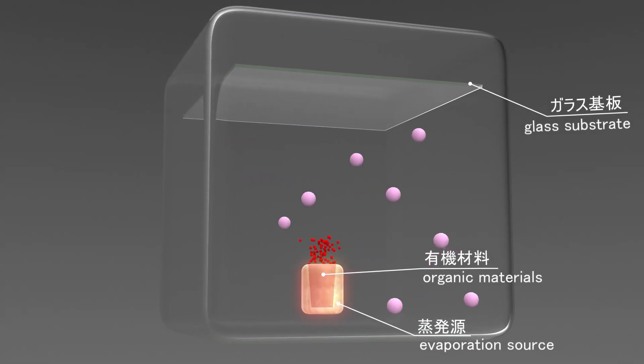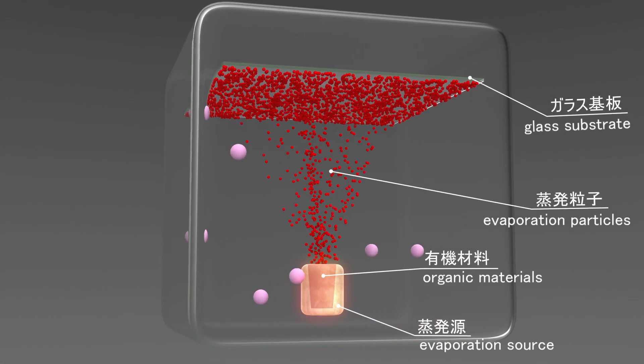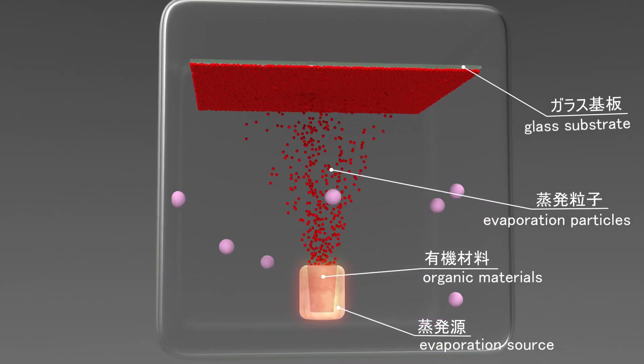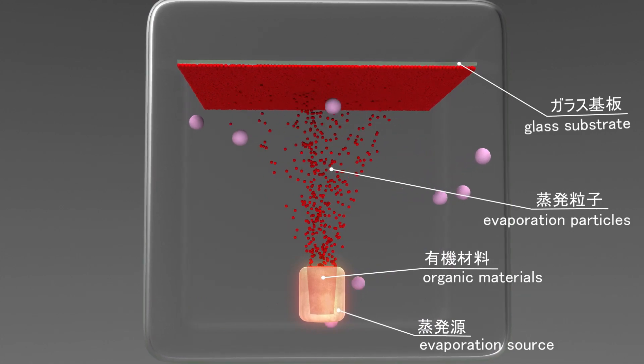Organic materials are heated and evaporated in the equipment under vacuum conditions, and the ejected evaporation particles adhere to a glass substrate while maintaining their linearity.